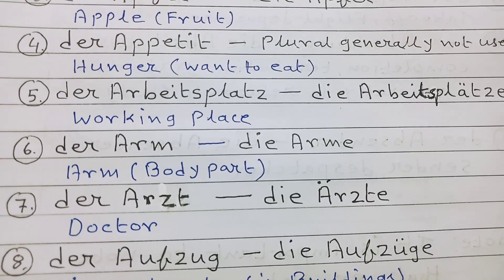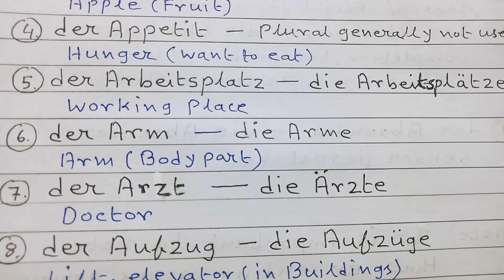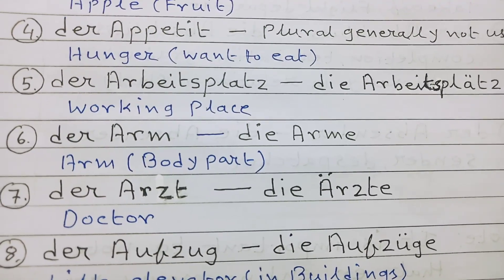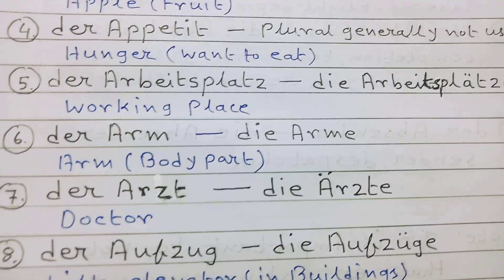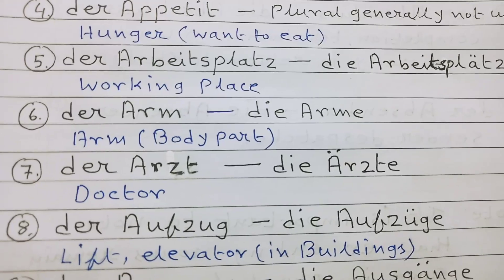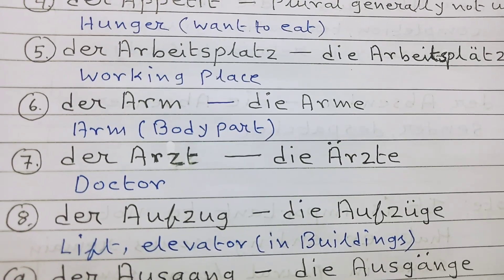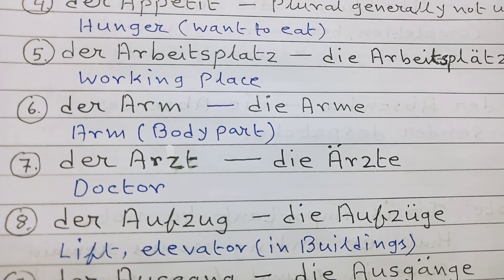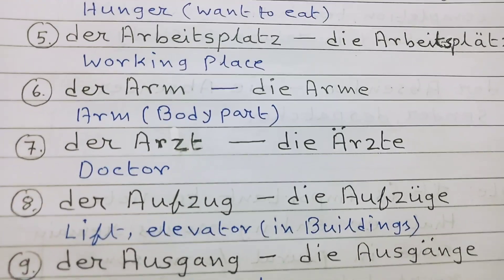Number 6: der Arm, die Arme — arm, body part. Number 7: der Arzt, die Ärzte — doctor.